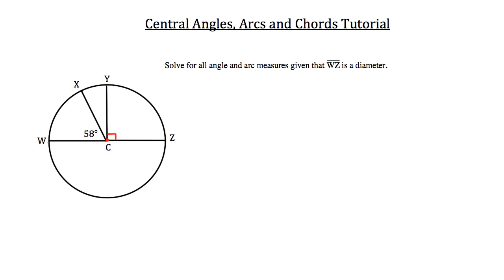We know that W, Z is the diameter of this circle. And we know that angle Y, C, Z — which is a central angle because it comes from the center — is 90 degrees, as indicated by that 90 degree congruence box. Also, we know that central angle W, C, X is 58 degrees. So I'm going to begin by making a list of the angles and a list of the arcs that we need to solve for.